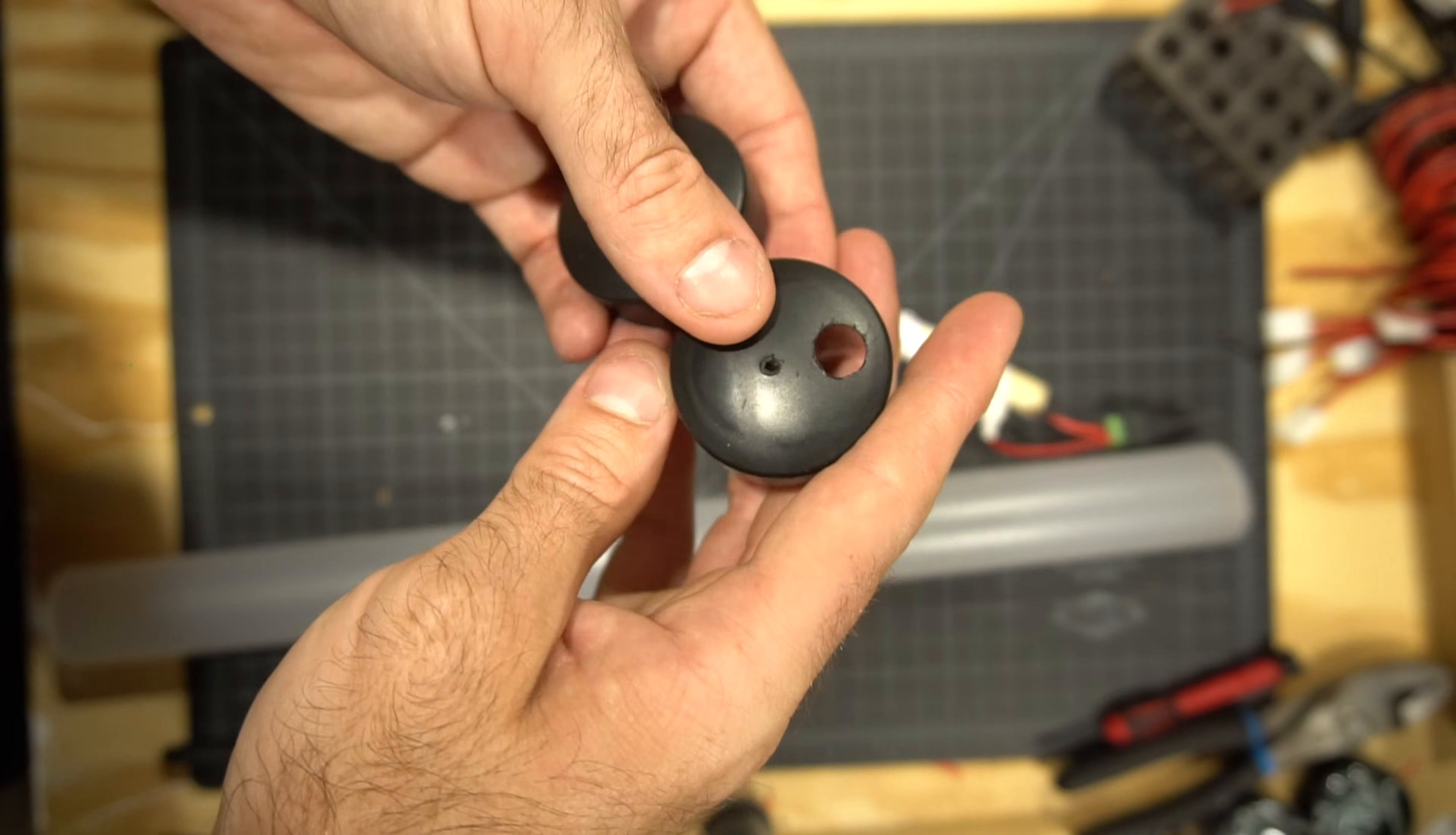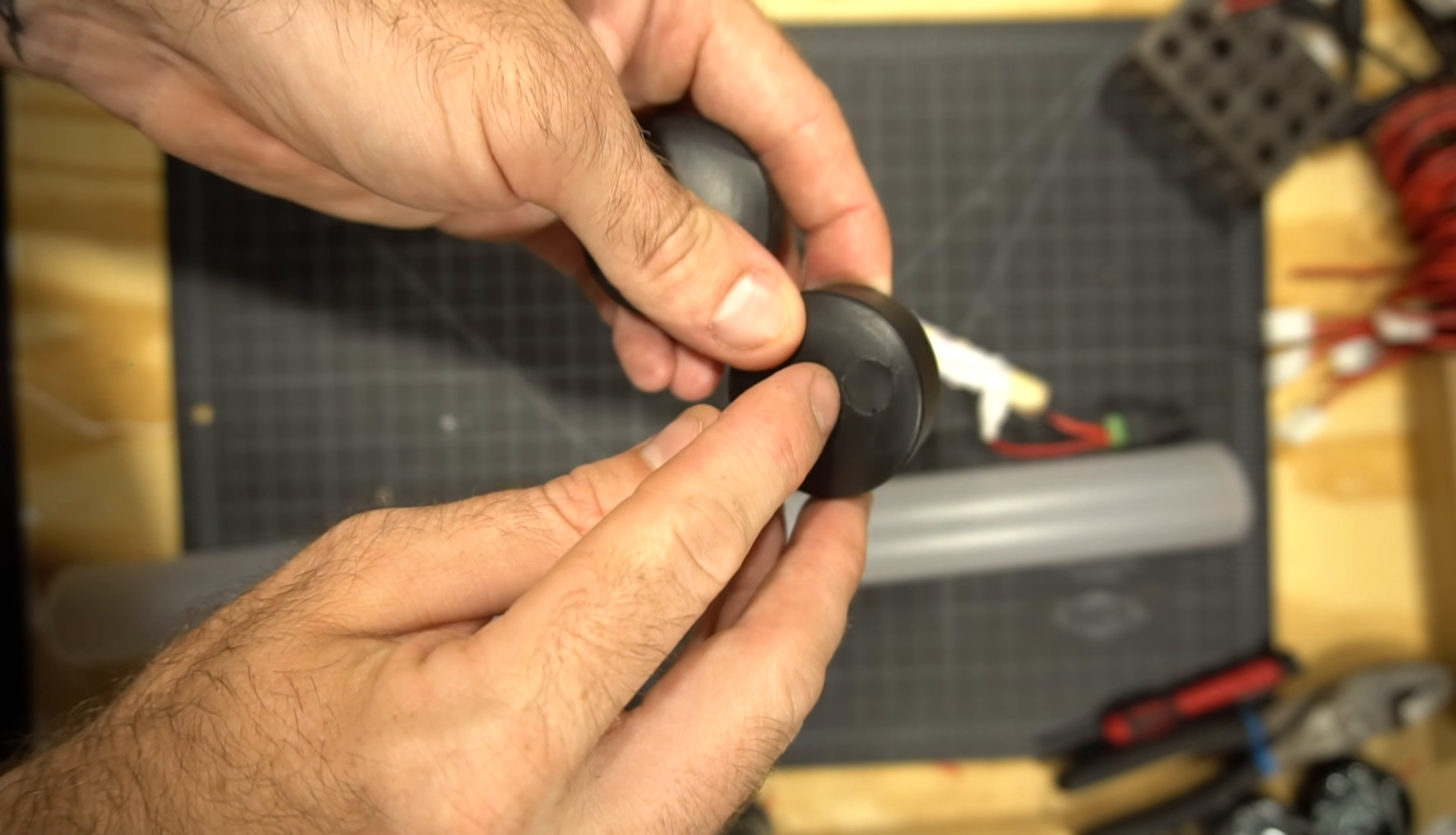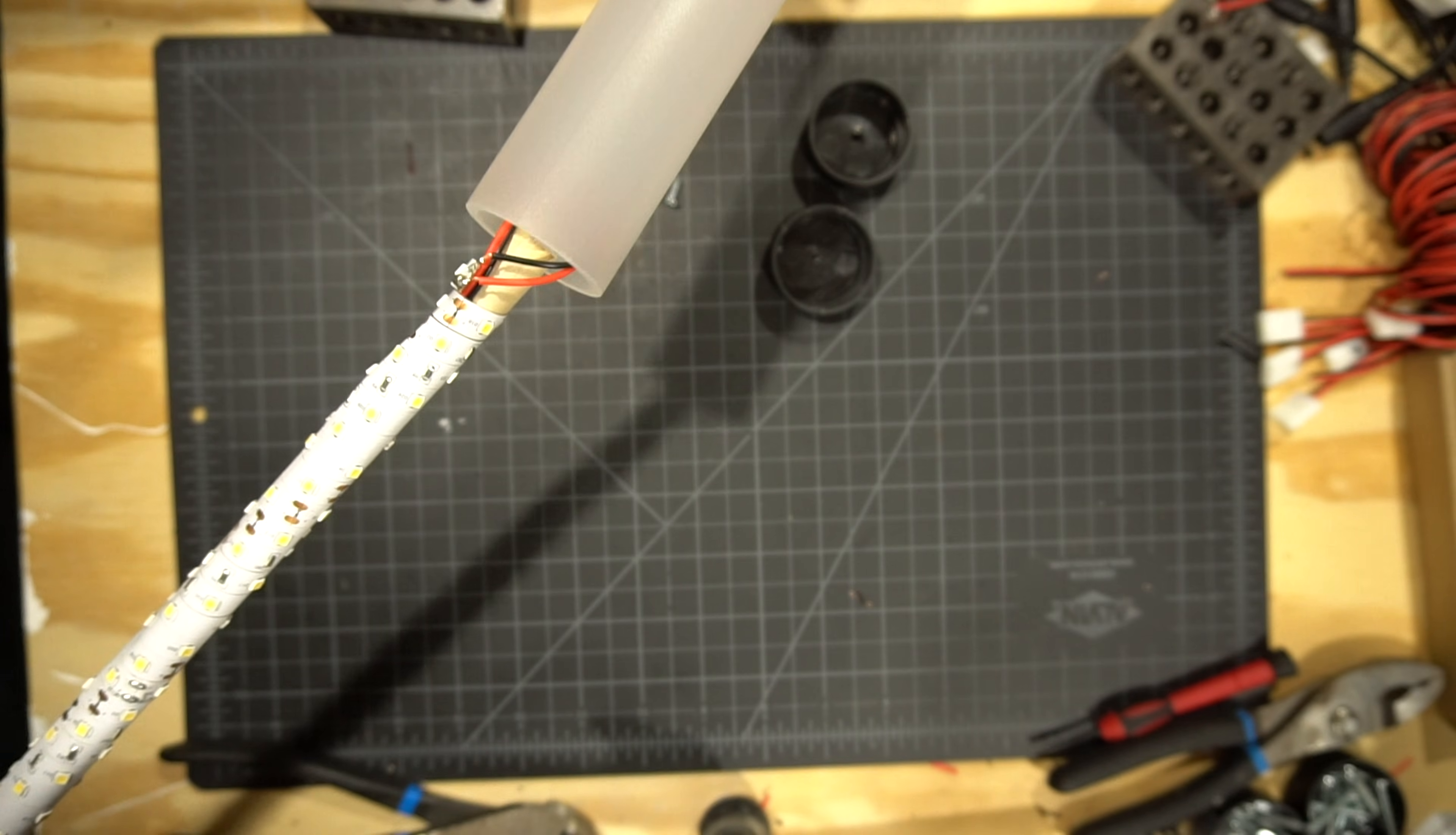In the end caps, you'll want to drill two very small holes directly in the center, and then drill a larger hole in the outer edge of only one of the end caps. I believe I used a quarter-inch bit for this one.